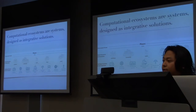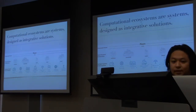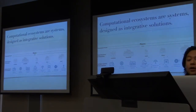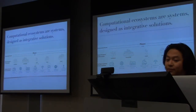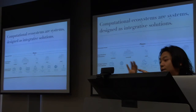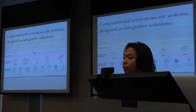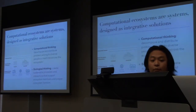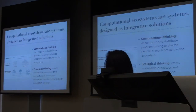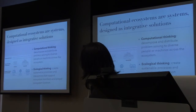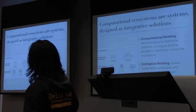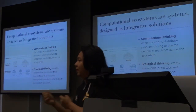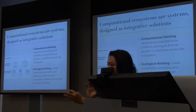With computational ecosystems, we're interested in designing simultaneously all these components of a socio-technical system as a single integrative solution. We're still thinking about people and technology, but taking a more comprehensive approach — constructing both the parts and how those parts interact, both technically and people-wise. To reason about all this added complexity, we're going to adopt two helpful perspectives: computational thinking, meaning decomposing and distributing problem-solving to diverse peoples and machines across an entire ecosystem.